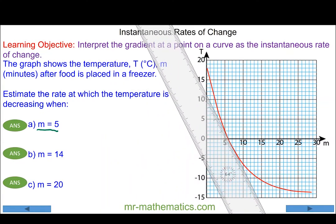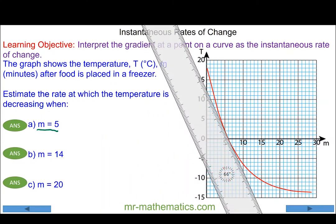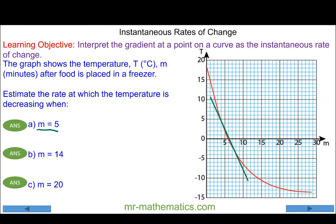We begin by drawing a tangent on the curve when m equals five, and we're going to find the gradient of this tangent by the change in the vertical, which is the change in temperature, divided by the change in time, in this case m for five minutes.